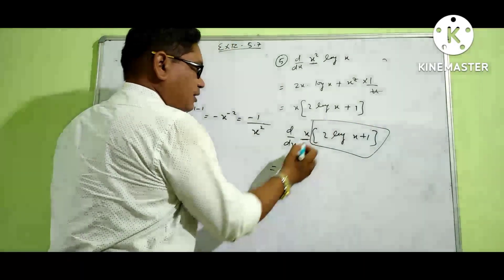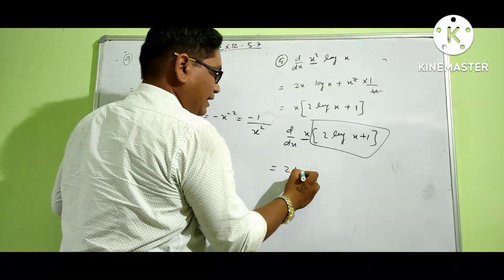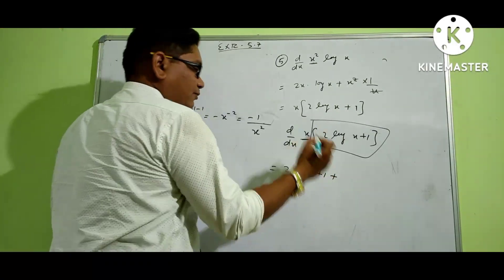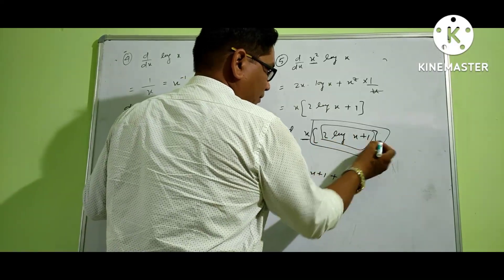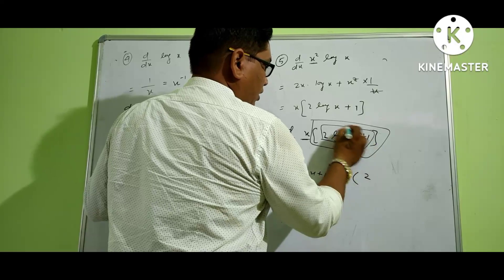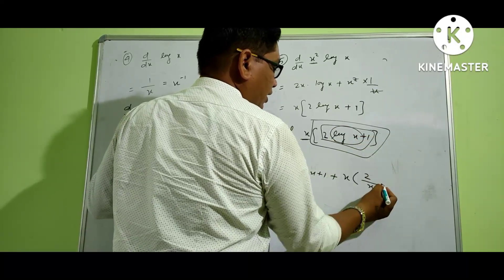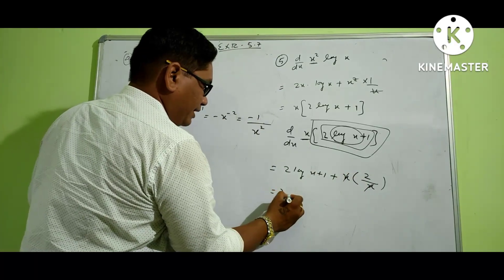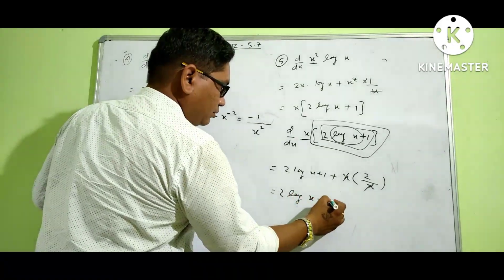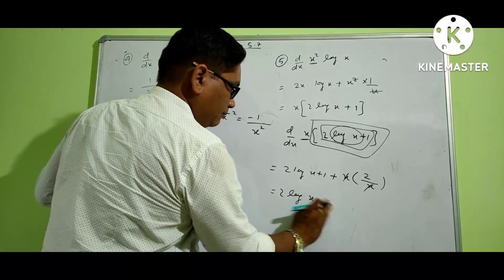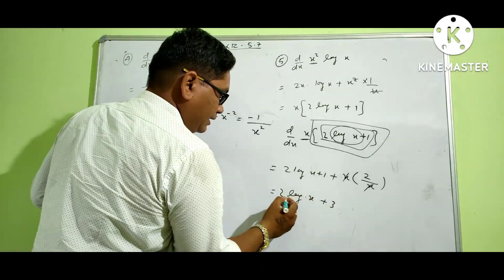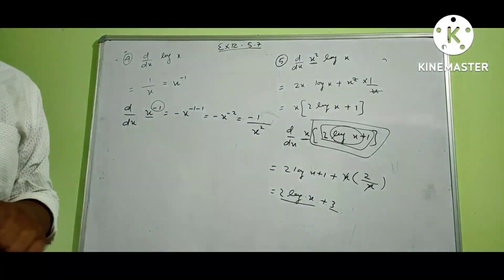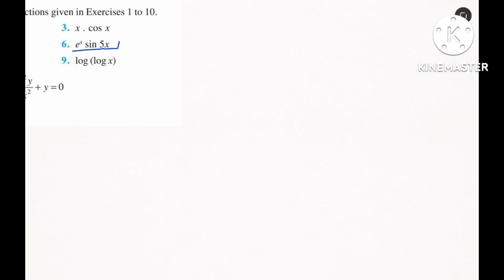Now differentiating x times (2 log x plus 1) using the product rule again: derivative of x is 1, times (2 log x plus 1) as it is, plus x as it is, times derivative of (2 log x plus 1). The derivative of 2 log x is 2 by x, and the derivative of 1 is 0. So x and x cancel, giving finally 2 log x plus 1 plus 2, which is 2 log x plus 3.